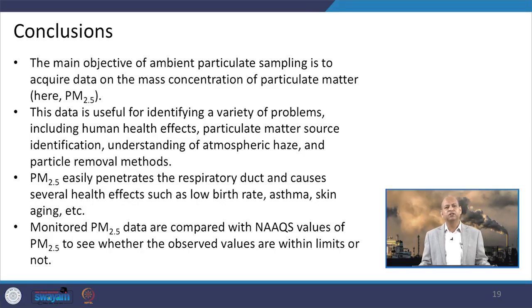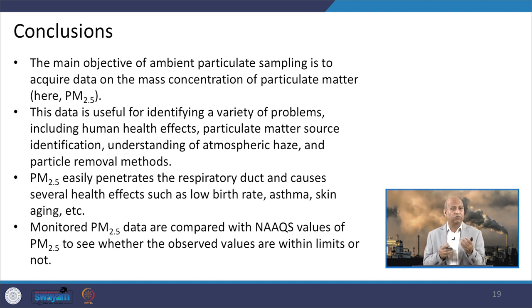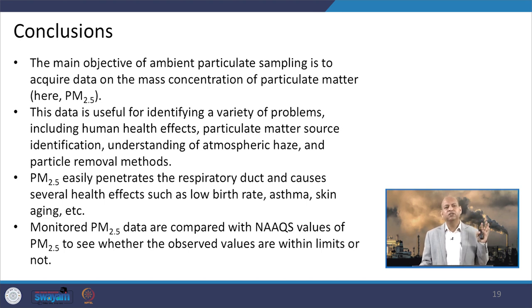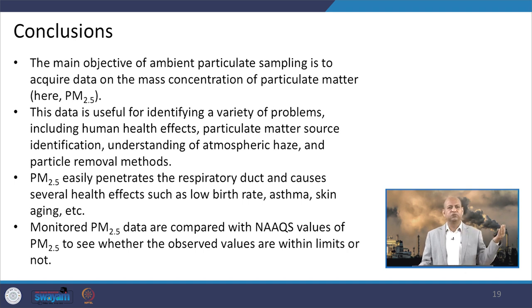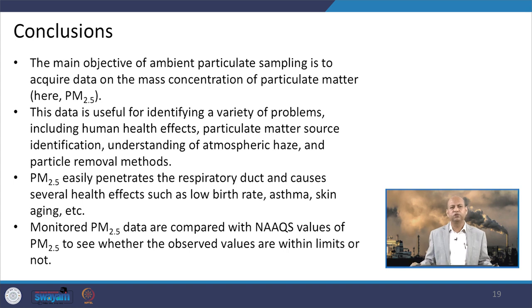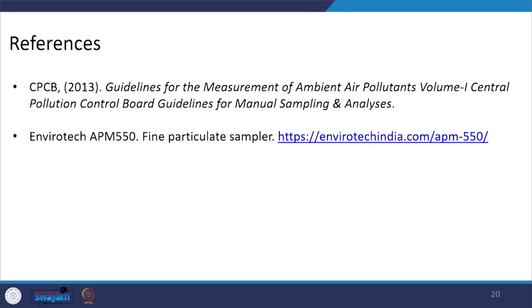We can conclude that the main objective of ambient air particulate sampling — whether PM 10 or PM 2.5 — is to obtain data to compare with ambient air quality standards, to determine whether concentrations are exceeding limits, and if so, how to control and reduce them by targeting certain sources through source apportionment studies. For various purposes we need to monitor air quality and different pollutants. PM 2.5 data is useful for health effect calculations and for determining whether air quality standards are being met. These are the references based on which this presentation was prepared.